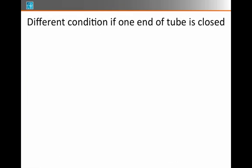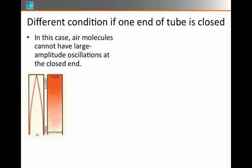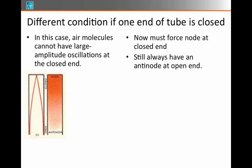But there is also a different condition if one of the ends of the tube is closed. Think of like a coke bottle that you blow across the top. In this case, air particles can't have large motion at the closed end, because you hit the wall. So if this is the open end of the coke bottle, and this is the closed end, I have to have a node here at the closed end and an antinode at the open end. So I always have to have nodes at the closed end, and then antinodes at the open end.